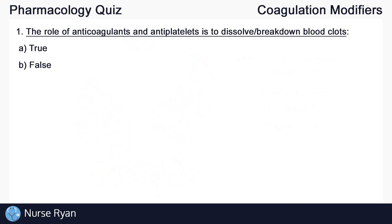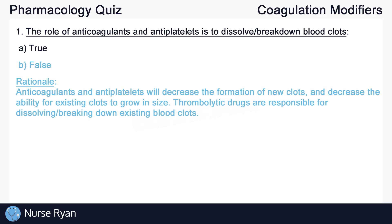Starting off with question number one: The role of anticoagulants and antiplatelets is to dissolve or break down blood clots. The answer here is B, false. Anticoagulants and antiplatelets will decrease the formation of new clots and decrease the ability for existing clots to grow in size. However, thrombolytic drugs are responsible for actually breaking down or dissolving pre-existing clots.